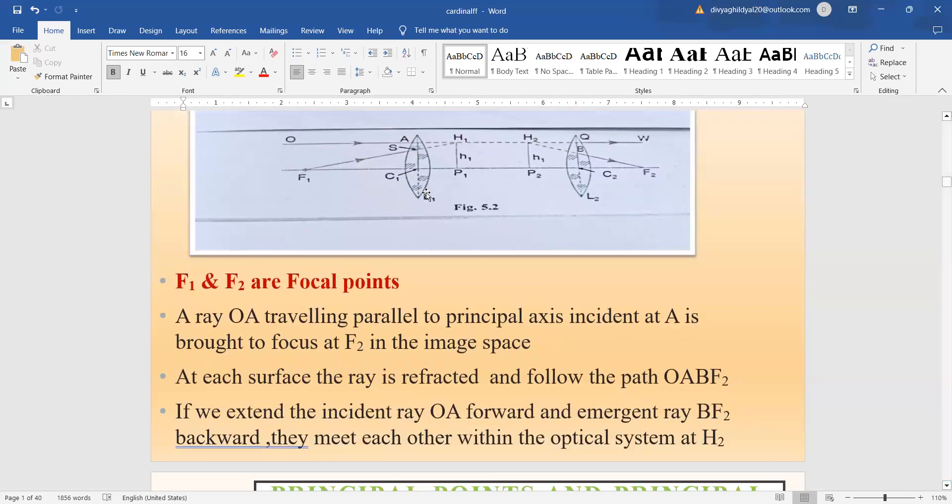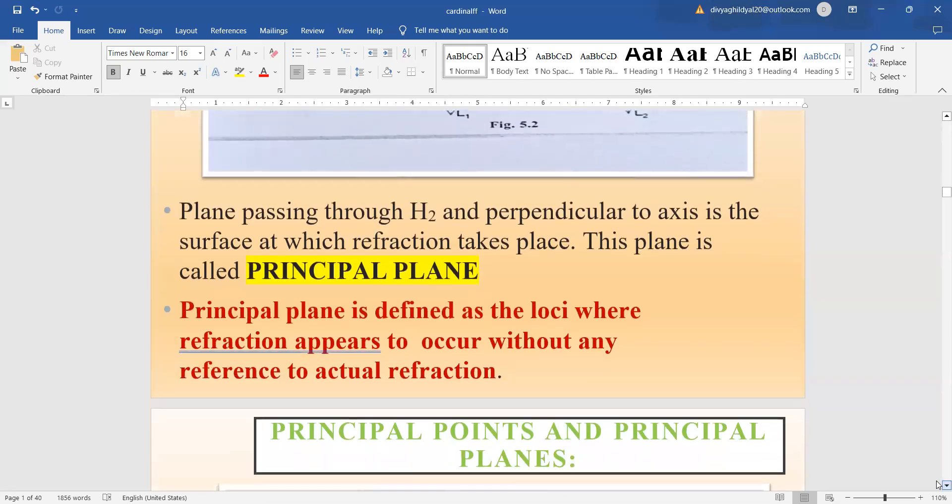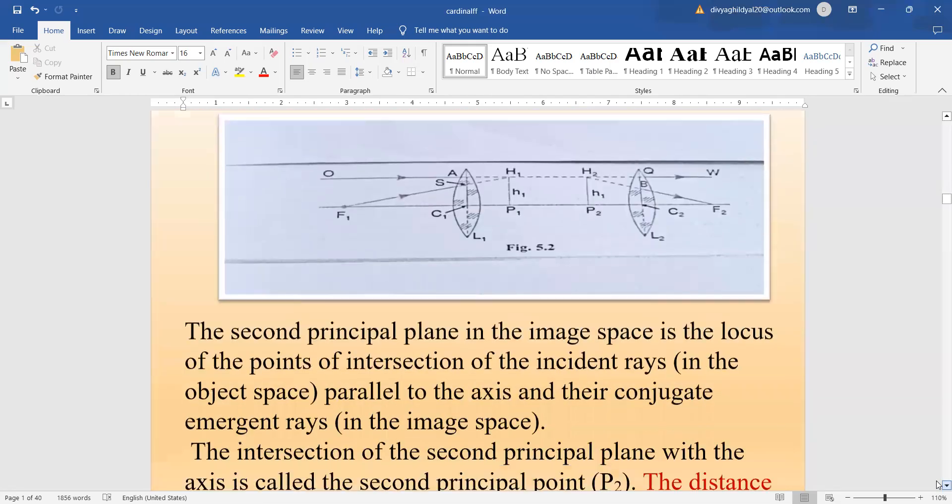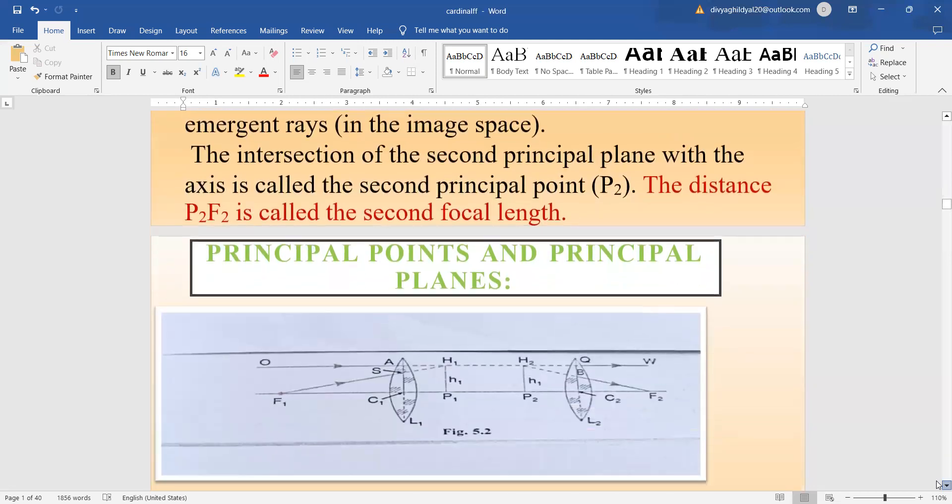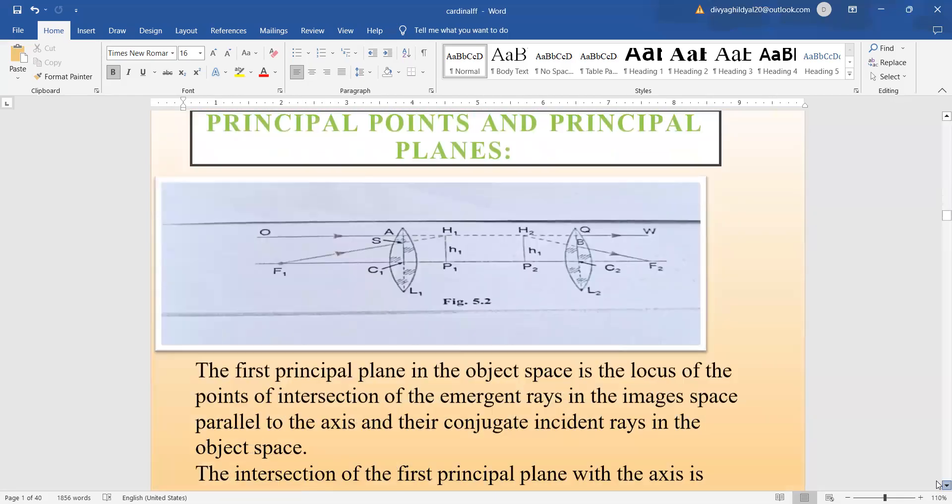Let us look at the diagram here. Two convex lenses are placed. F1 is the first focal point, F2 is the second focal point. P1 and P2 are the two principal points, and H1 and H2 represent the principal planes. We have shown you the principal plane. The first and second principal planes - you should have a bit of idea about these things before you start the experiment.